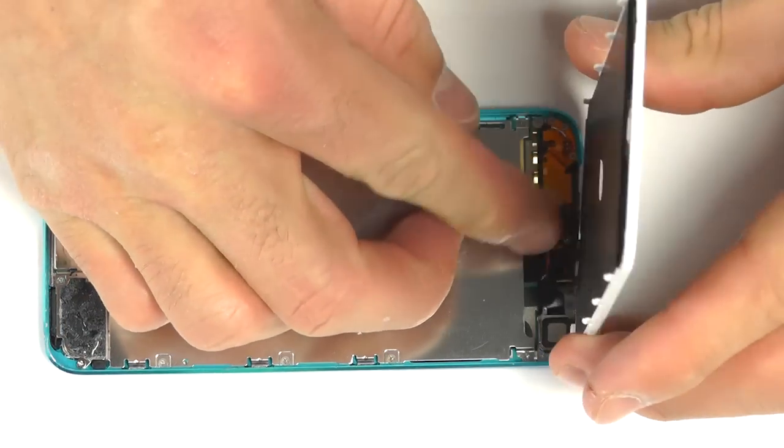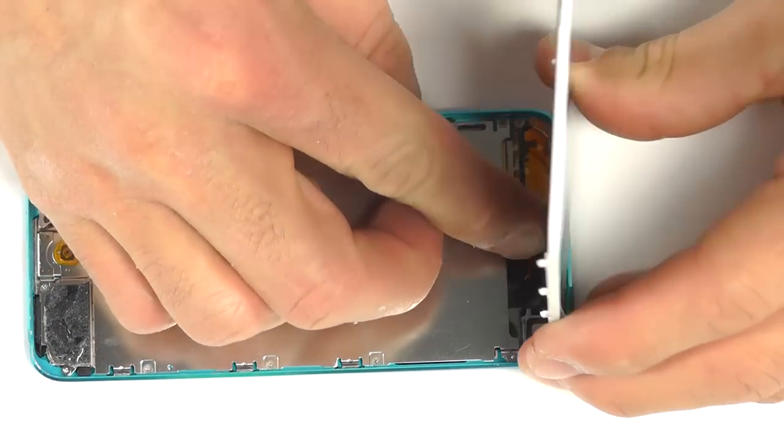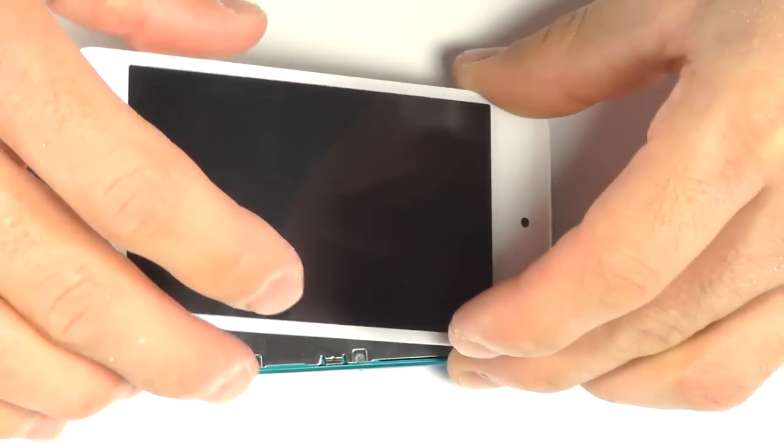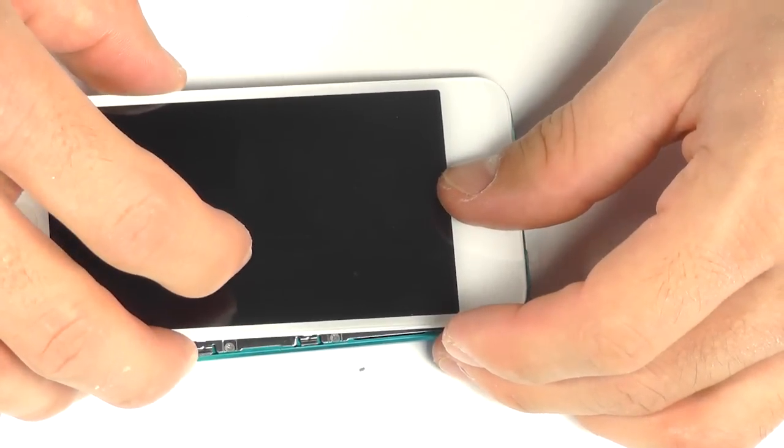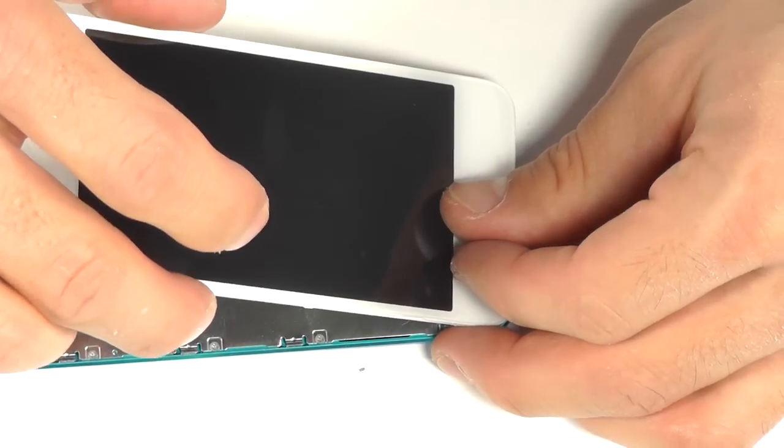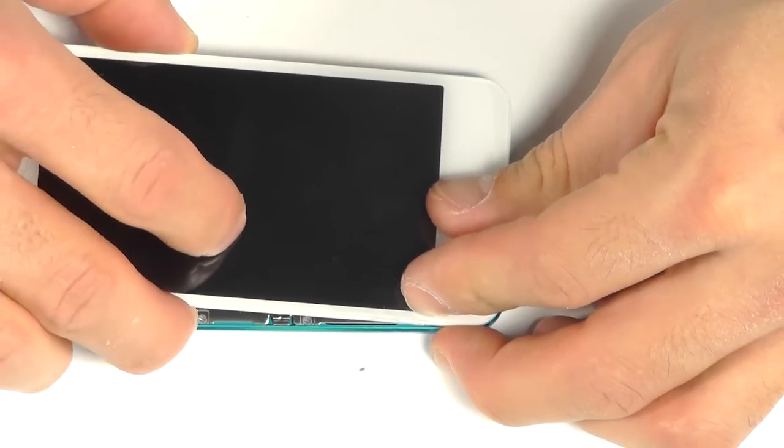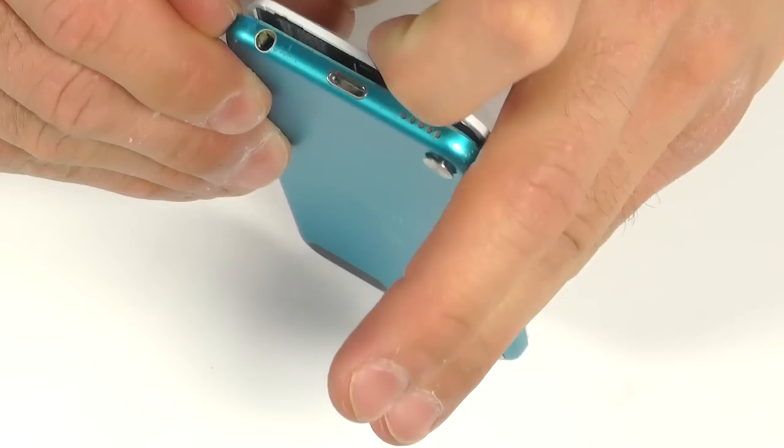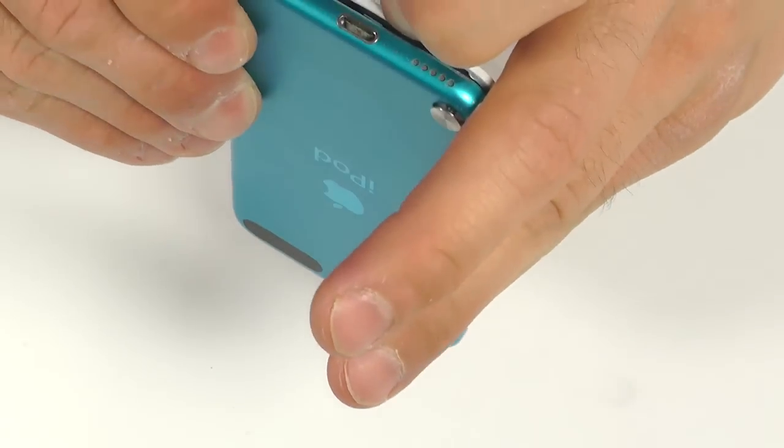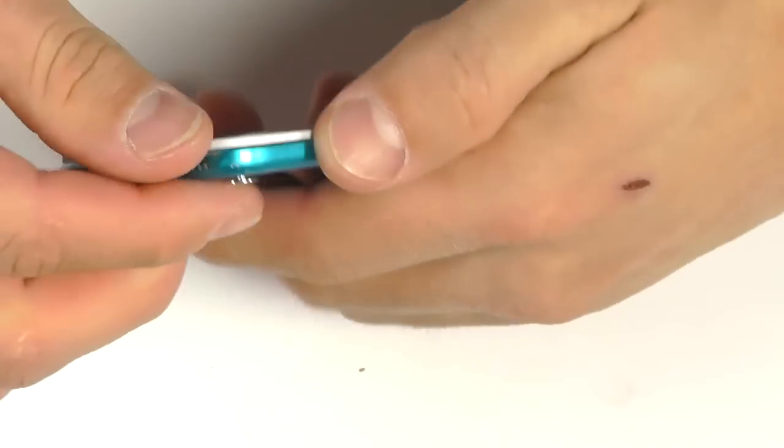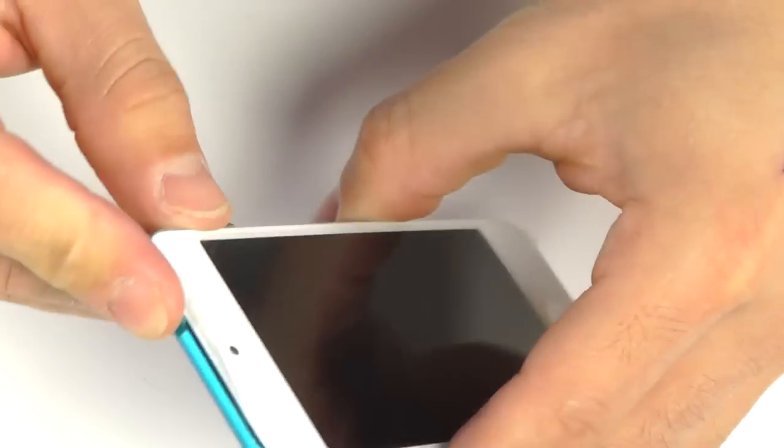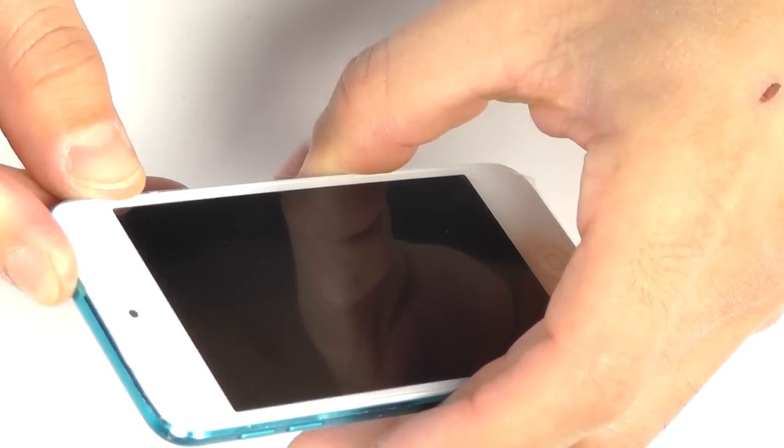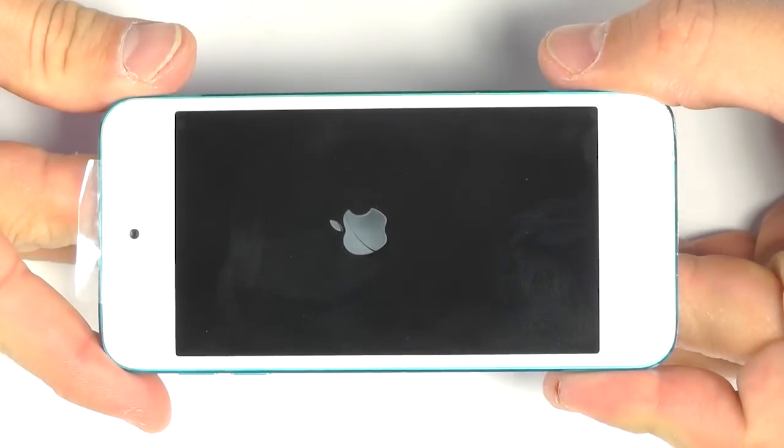With all of our screws in, we can now line up our front facing camera to our new display assembly and bring it down to the base of our iPod. Push firmly and evenly around the new display assembly until it clips down into the base. With our new display assembly flush around the entire unit, we can power it on to check for full functionality.